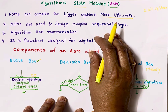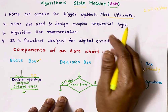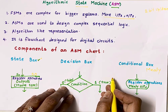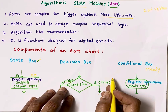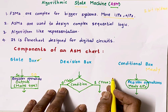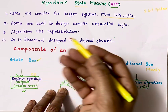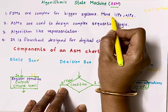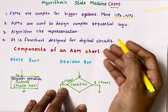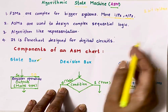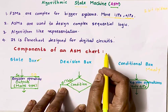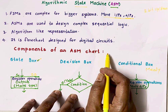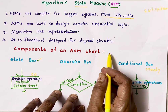When we design sequential circuits in digital electronics, we generally use finite state machines — Mealy FSM or Moore FSM. But when the complexity of a system increases, when the number of inputs and outputs increases, FSMs become very bulky. And in that case, we use algorithmic state machines.